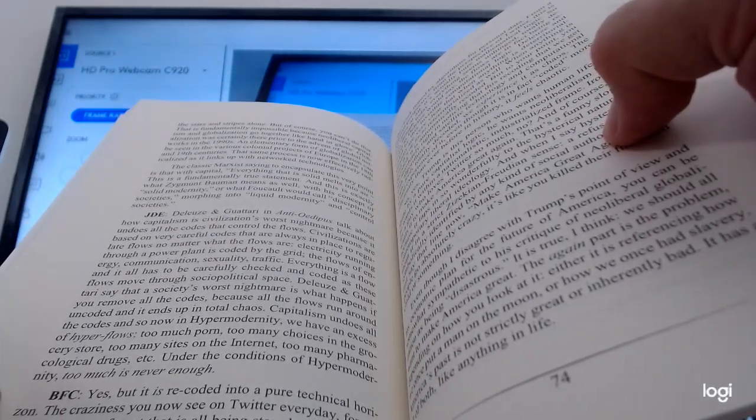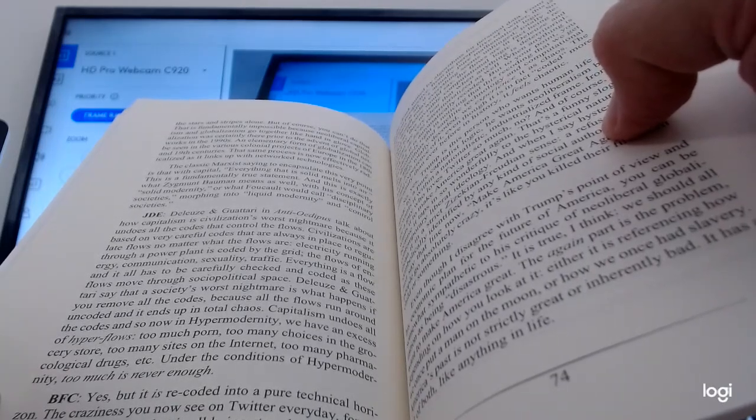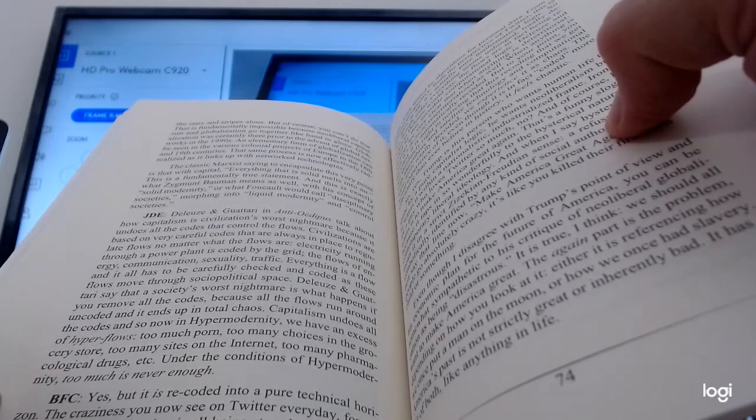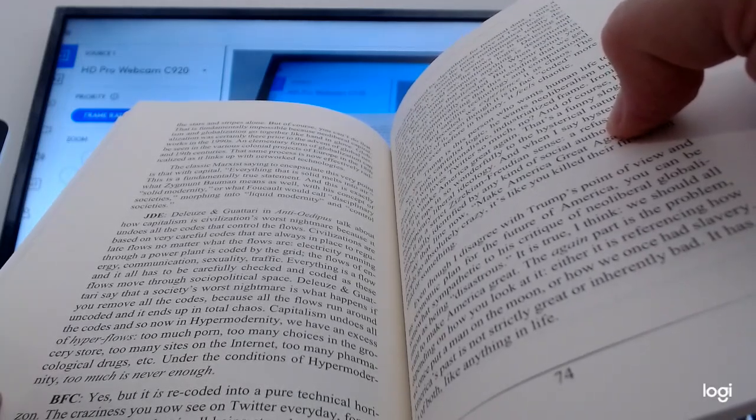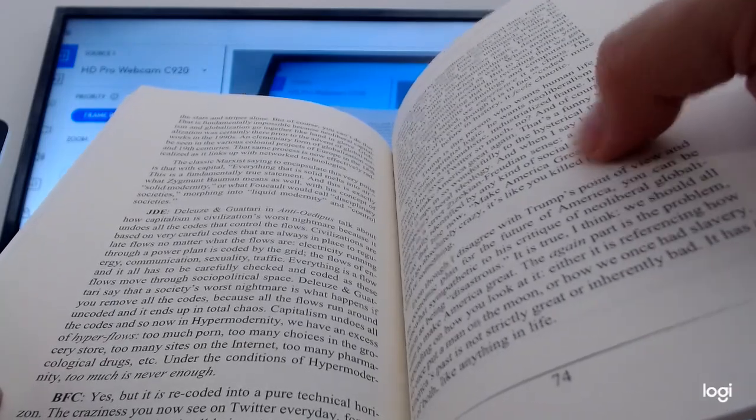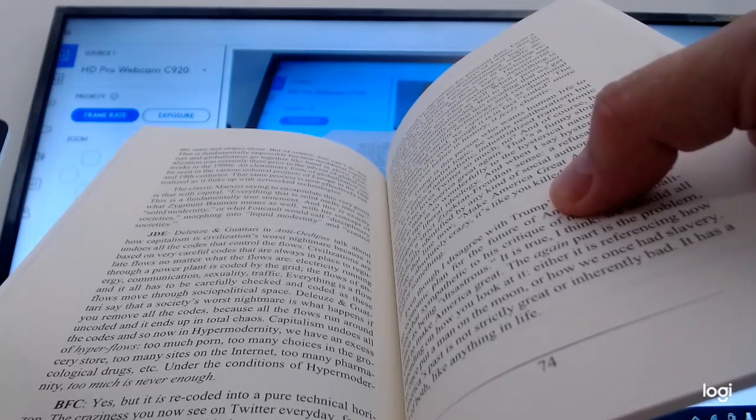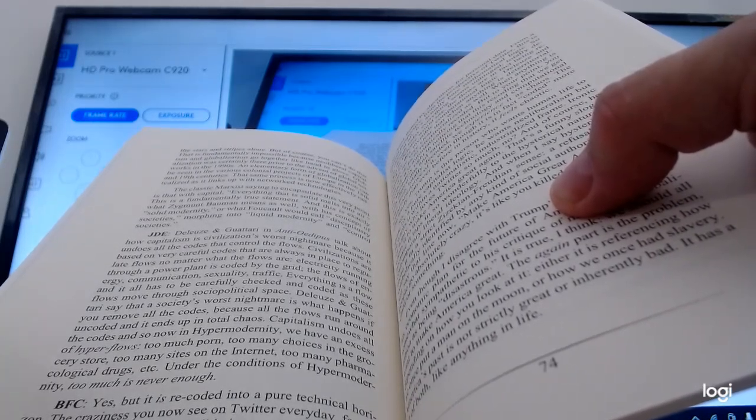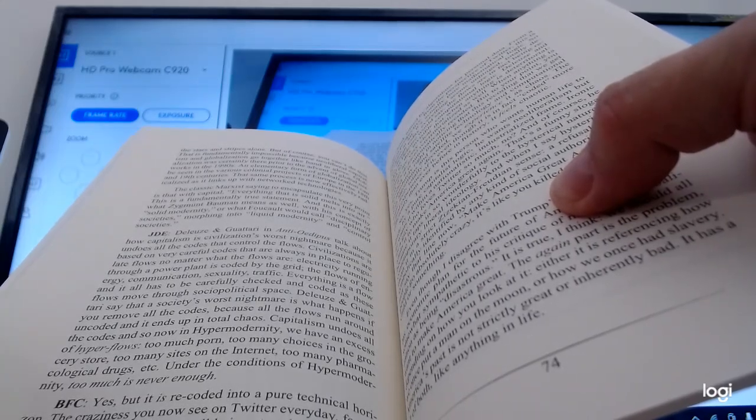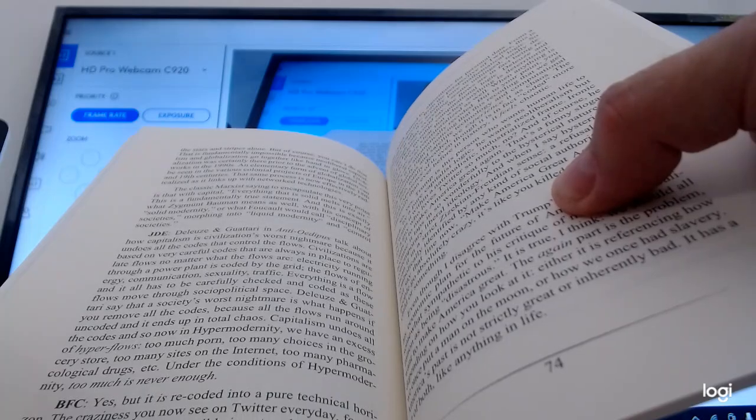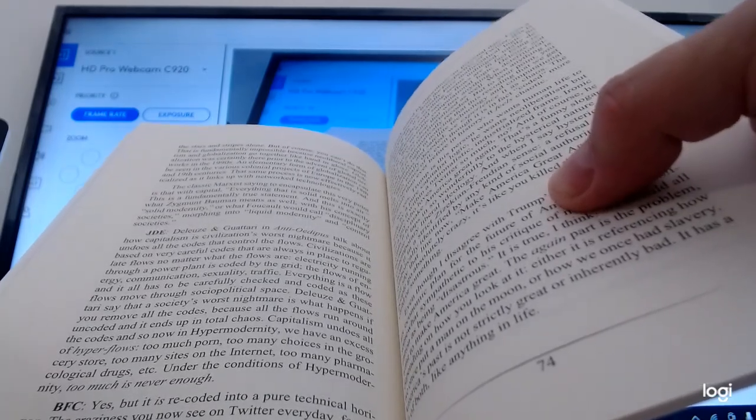The power of the nation-state to regulate capitalism becomes progressively impotent, and of course, this is the way markets want it. Digital technology is fundamentally borderless. I can send PayPal to somebody in Japan or Nigeria right now, can't I? So the absurdity of Trump's policy is that he wants neoliberalism absent the globalization. In other words, he wants unregulated capitalism effectively contained behind a concrete wall. He wants neoliberalism under the banner of the stars and stripes alone. But of course, you can't do that. That is fundamentally impossible because neoliberal capitalism and globalization go together like hand in glove.